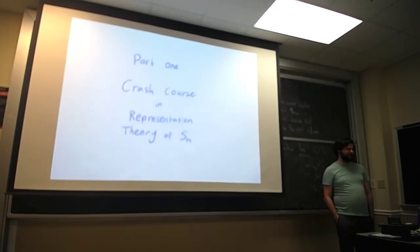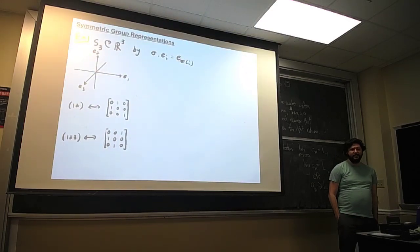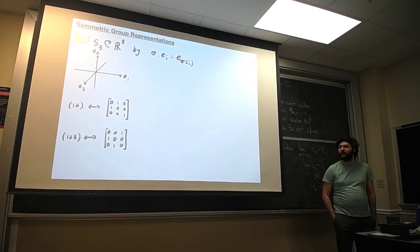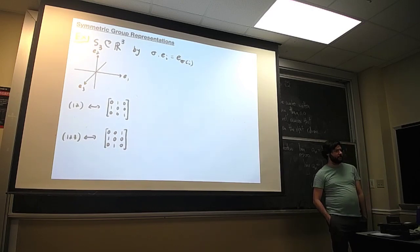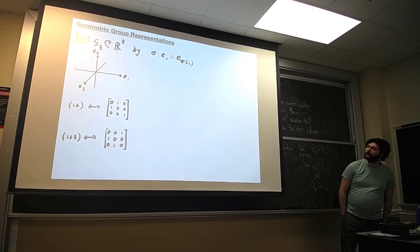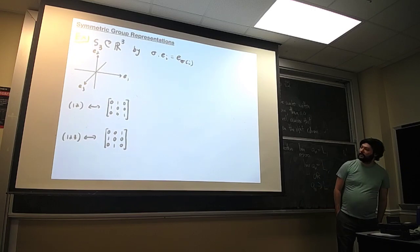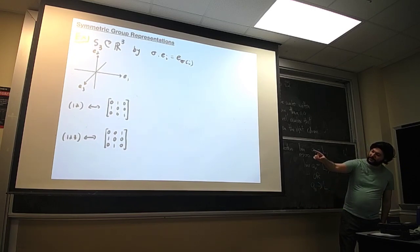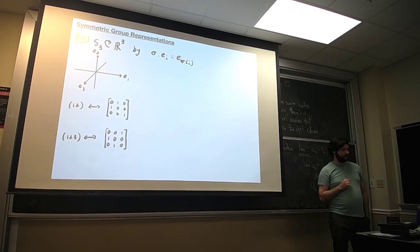It's something I'm really into, and there are a lot of objects and terminology to cover. A picture I'd like to have in mind when thinking about a representation is this one. We have the symmetric group S3 — all these permutations of three elements — acting on Euclidean space R3 by permuting the basis vectors. This allows us to associate to each permutation a permutation matrix, which describes how it acts.